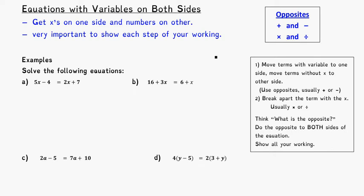We're going to look at equations where there's variables on both sides, meaning there's letters like x's on both sides of the equal sign. Our aim is still to get x by itself, so one thing we have to do is get all of the x's to one side of the equation, combine them together using like terms, put the numbers on the other side, and then break apart the number with the x.